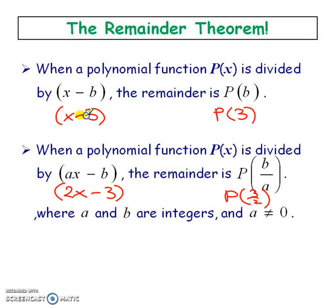What you're going to do is take the opposite of this number so a positive 3 and sub it into P(x). Everywhere you see an x you're going to put a 3 instead. Then you're going to solve and that's going to be your remainder.